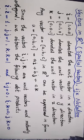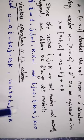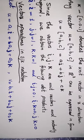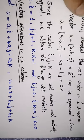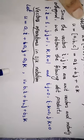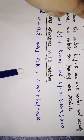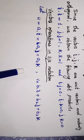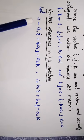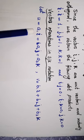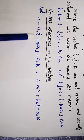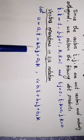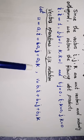Next, we will see the vector operations in i, j, k notation. Suppose we have a vector u which equals a1·i plus a2·j plus a3·k.